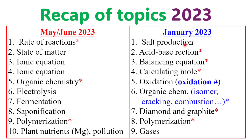For January 2023: salt production was tested. Acid-base reactions — again, also tested the previous year. Balancing chemical equations — again, a must; do not go to the exam without knowing how to balance equations. Calculating moles, and note that some of these topics overlap — you may get a question that combines calculating moles and balancing equations. They also tested oxidation and redox, specifically calculating oxidation numbers, on January 2023.